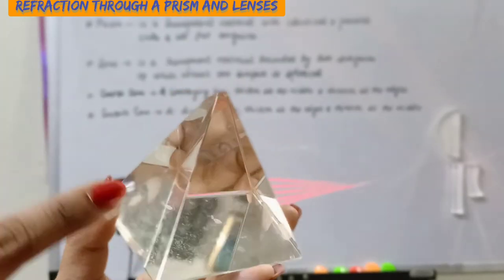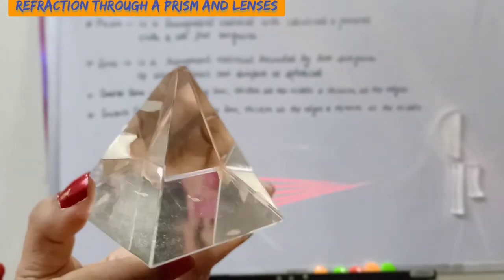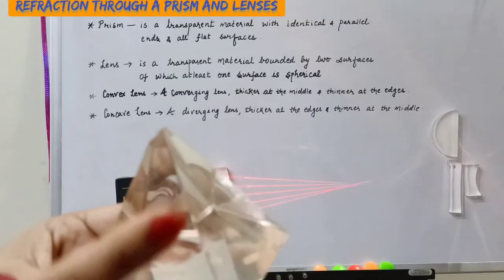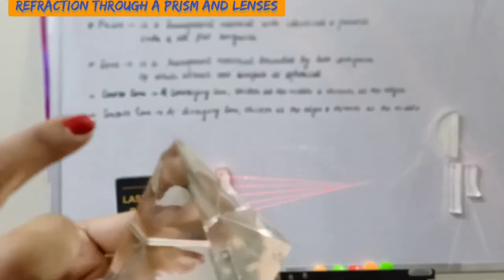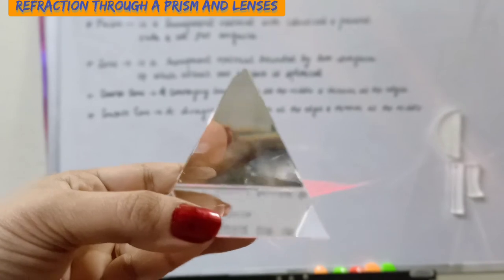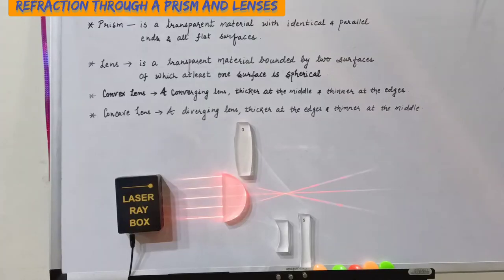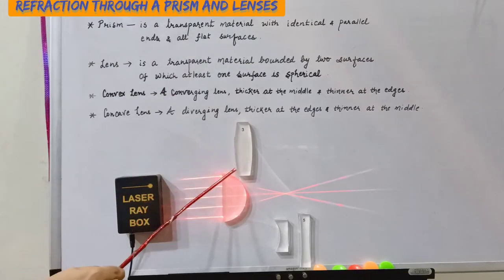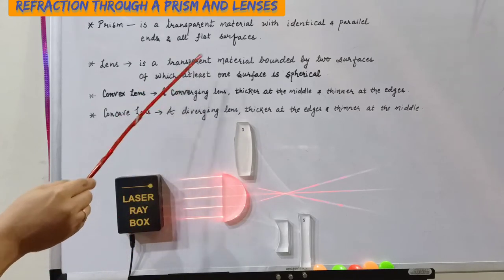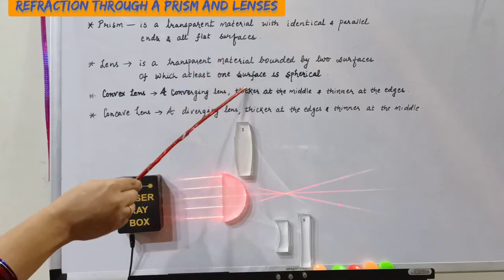This material also has flat surfaces, but you may observe that the ends are not parallel, so it will not be considered as a prism. A lens is a transparent material bounded by two surfaces of which at least one surface is spherical.